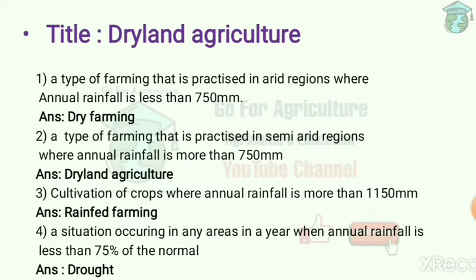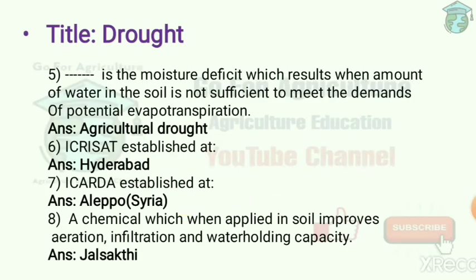Next question: a situation occurring in an area when annual rainfall is less than 75 percent of normal is known as drought. When the deficiency of rainfall is above 50 percent of normal, this is called severe drought.